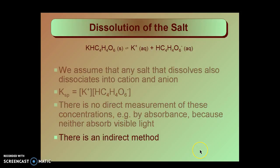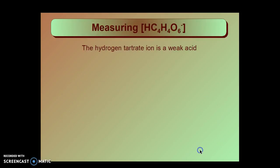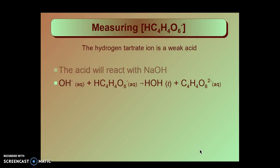There is however an indirect method of finding the concentration of the hydrogen tartrate ion. And that takes advantage of the fact that the hydrogen tartrate ion is a weak acid. And of course acids react with bases. This acid will react with the strong base sodium hydroxide. As you can see here the hydroxide ion reacts with the hydrogen tartrate ion and gives us water and tartrate ion. This reaction is essentially complete because the water has such a small dissociation constant.